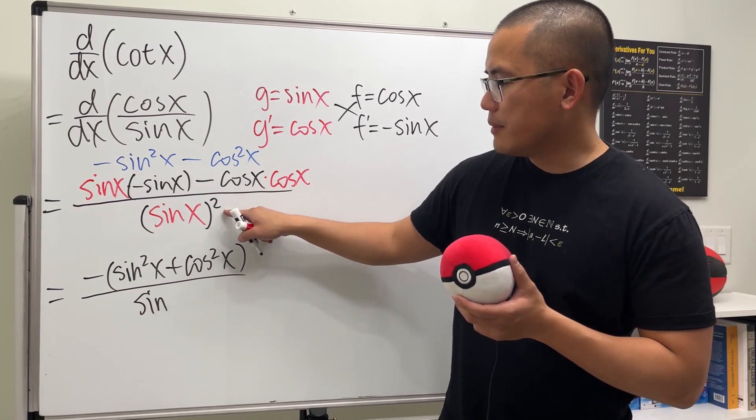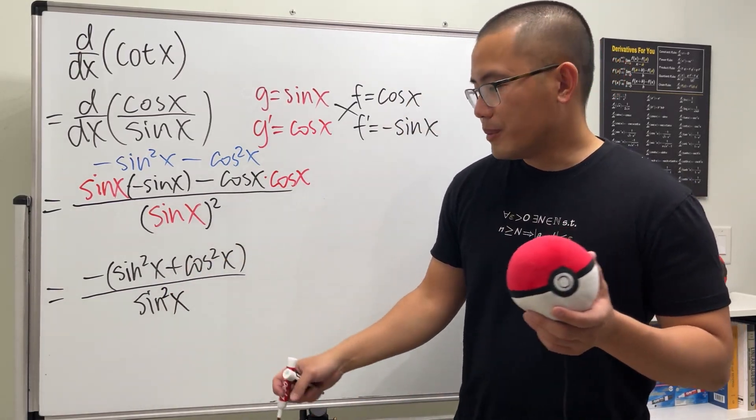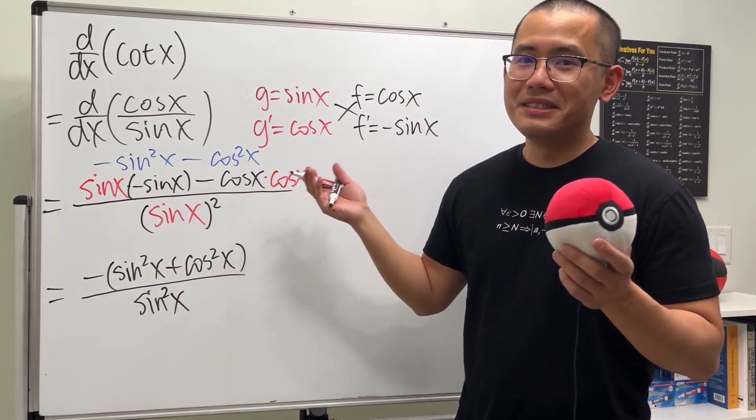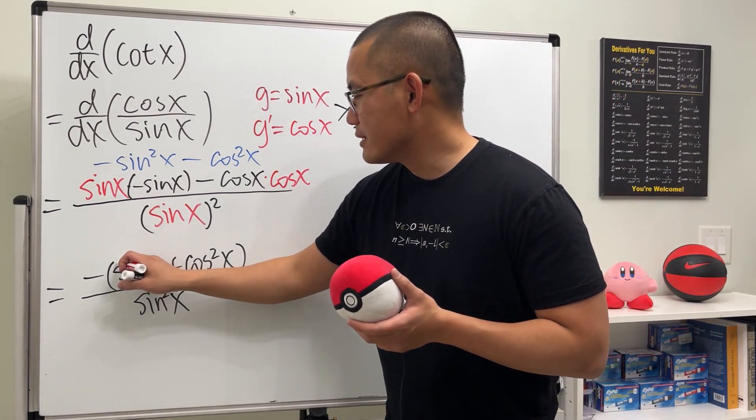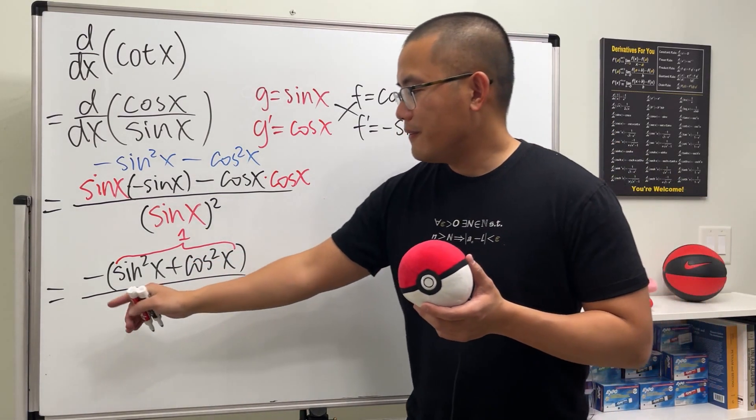So sinx squared is the same as if you put a 2 right here. So I will do that right here. And ladies and gentlemen, what's this? This is the famous identity, right? Because sinx squared plus cosx squared, this is just nice to equal to 1. So in fact, we have just negative 1 on the top.